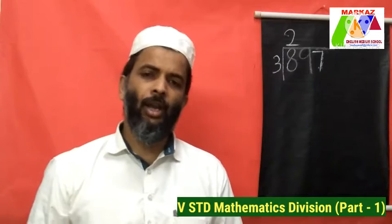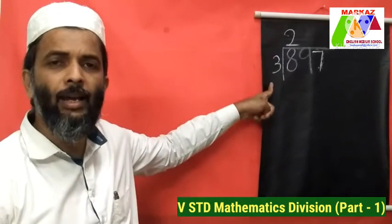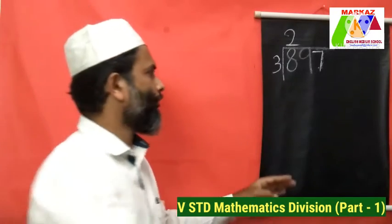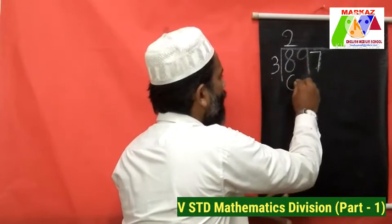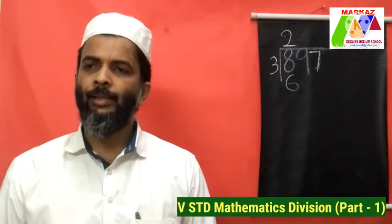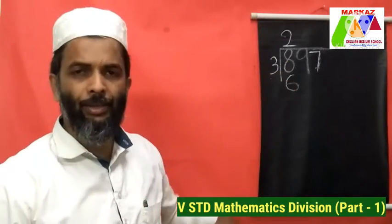What's the next step? We have to multiply the quotient and the divisor. What is 2 into 3? It is 6. 2 into 3 is equal to 6. The next step is subtracting — subtracting 6 from 8.